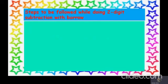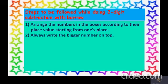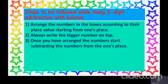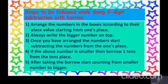Here are the steps again for two-digit subtraction with borrowing. First, arrange the numbers in the boxes according to place value starting from the ones place. Second, always write the bigger number on top. Third, start subtracting from the ones place. Fourth — a very important step — if the above number is smaller, borrow one tenth from the tens place. After taking the borrow, start counting from the smaller number to the bigger number. So are you ready? Let's begin with the examples.